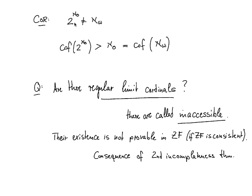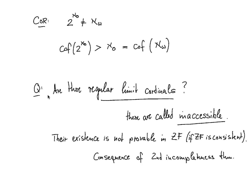As a corollary, we immediately obtain that 2^ℵ₀ cannot equal ℵ_ω. While this doesn't settle the continuum hypothesis, it tells us something: cf(2^ℵ₀) > ℵ₀, whereas cf(ℵ_ω) = ω = ℵ₀. Since these cofinalities differ, 2^ℵ₀ ≠ ℵ_ω.